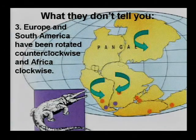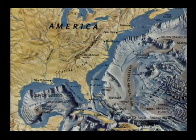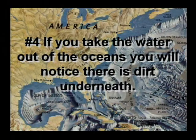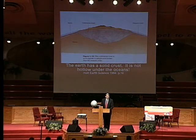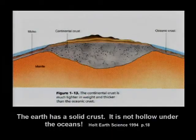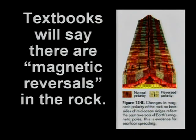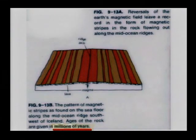They also don't tell you what ought to be obvious: if you took the water out of the oceans, you would notice there is dirt underneath — the oceans have a bottom. They're still connected right now! The earth has a crust; the low places are full of water. They say there are magnetic reversals in the mid-Atlantic ridge, but that's simply not accurate. There are no reversed polarity areas unless it's where rocks flipped over when the fountains of the deep broke open.